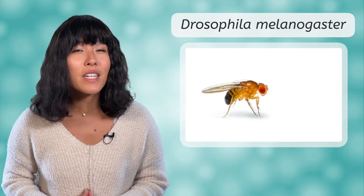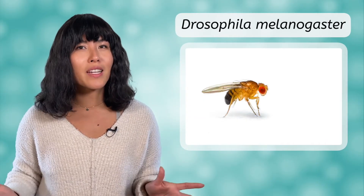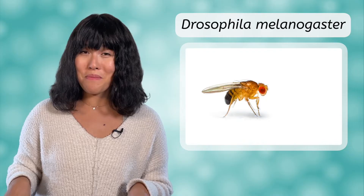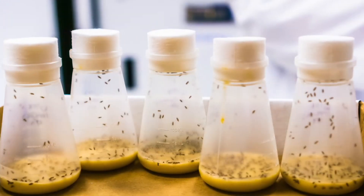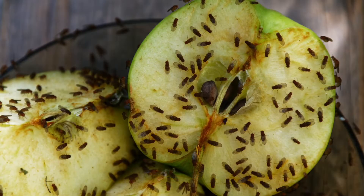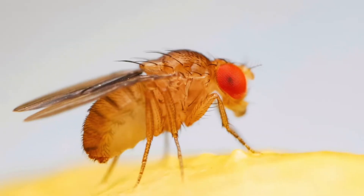We'll look at three examples of pedigrees today to practice, then you'll get to explore some others in the lesson PDF. All of the pedigrees we'll look at in this video are based on the organism Drosophila melanogaster. You may remember that this is the scientific name for fruit flies. They are actually the most commonly studied animal in genetics — they're cheap, they reproduce quickly, and with only four chromosomes, their genes are very easily mapped.